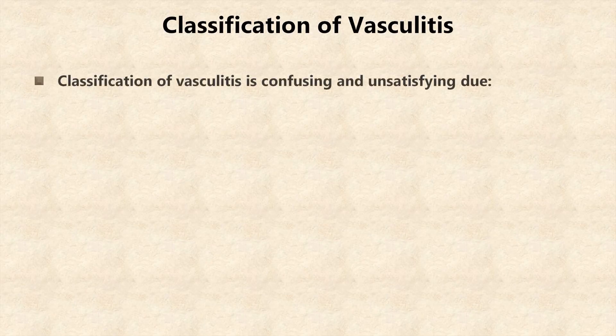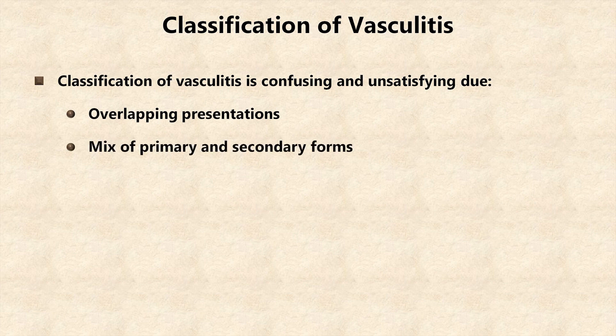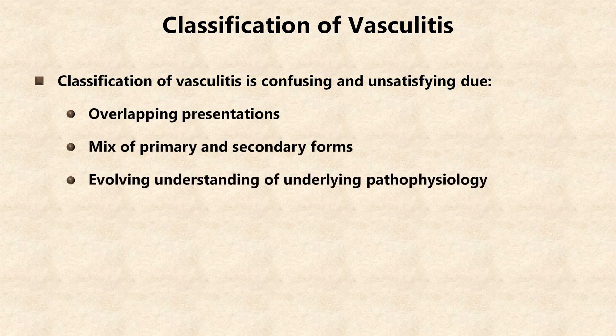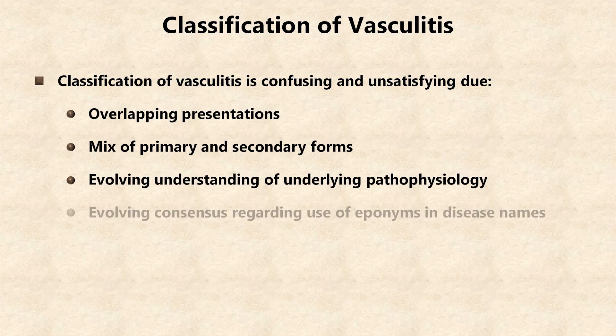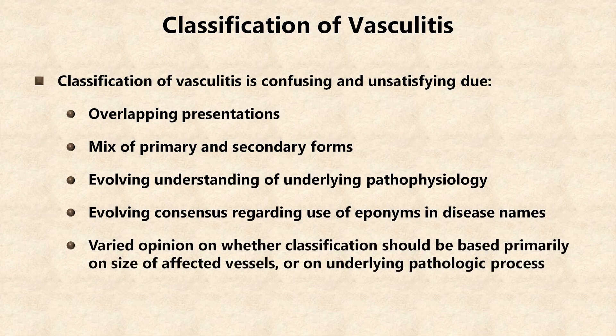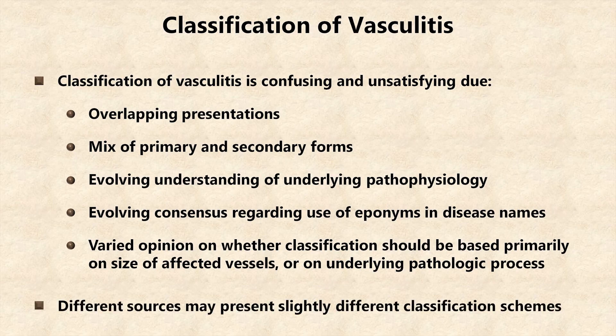Although I won't be reviewing the individual diagnostic criteria of the vasculitides, it's important to be familiar with their general classification scheme. Unfortunately, the classification of vasculitis is confusing and unsatisfying due to many reasons, including overlapping presentations, a mix of primary and secondary forms of vasculitis, evolving understanding of the underlying pathophysiologies, an evolving consensus regarding use of eponyms in disease names, and varied opinion on whether classification should be based primarily on the size of the affected vessels or on the underlying pathologic process. As a consequence, different sources may present slightly different classification schemes.